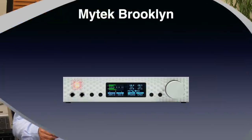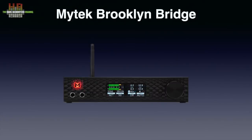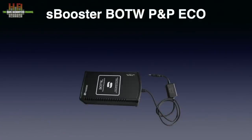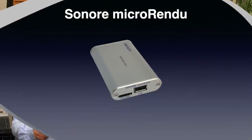In my setup I have used the same DAC for some years now, the MyTech Brooklyn — initially the first generation and currently the Brooklyn Bridge, which is almost identical but has a network bridge integrated. Sound-wise there is little to no difference between the DAC function of both. I used them with the S-Boosted BOTW PMP Eco MK2 at 12 to 13 volts, bypassing the internal switch mode power supply. The initial source was an Apple Mac Mini running Roon and connected over USB Audio Class 2, followed up by the Sonore Micro Rendu network bridge, which gave a clear sound improvement.